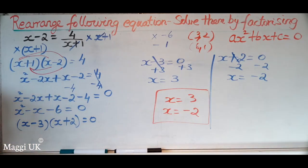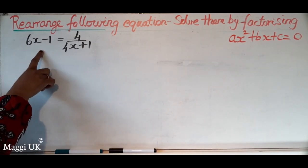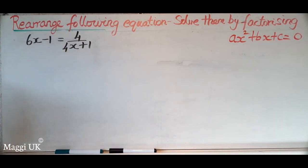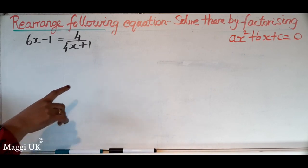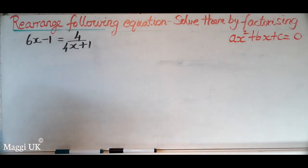Hope you understood that. The next example is similar — David is going to answer it. The equation is 6x minus 1 equals 4 divided by (4x+1). First step: get rid of the fraction by multiplying both sides by (4x+1), so that cancels, and we multiply this side by (4x+1) as well.